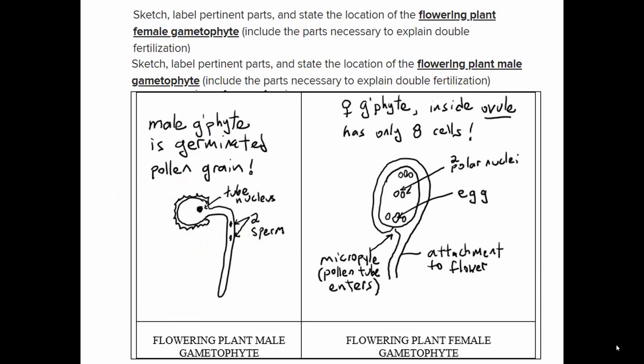What are the gametophytes in flowering plants? There's been an evolutionary tendency for gametophytes to become comparatively small relative to the sporophytes as plants became more advanced. A male gametophyte is basically just a pollen grain. When germinated it's drawn as a circular structure with an extension called the pollen tube. It contains exactly two sperm — not one, not three, but two.